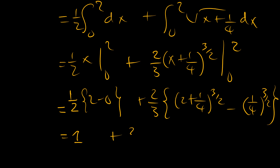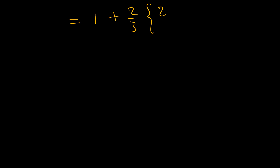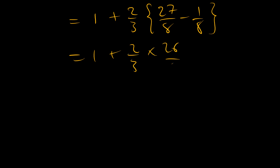Evaluating, one half times 2 is 1. For the second term, at x equals 2 we have x plus one quarter equals nine fourths, whose square root is three halves, so nine fourths to the three-halves is 27 over 8. At x equals 0 we have one quarter to the three-halves which is one eighth. So the second term gives two thirds times 27 over 8 minus one eighth, which is two thirds times 26 over 8.